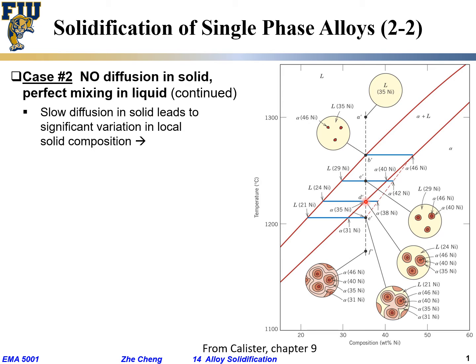We are doing solidification not under equilibrium — not very slowly, but fast. The red dashed line represents the so-called x-bar, the average solid composition. Because the first bit of solid formed at the center has the highest nickel content, and at the surface the interface has this lower value, somewhere in between is the average solid composition. So at this temperature, my average solid composition is here.